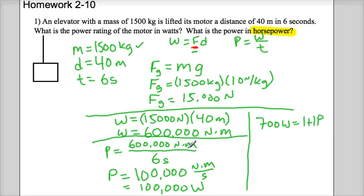So, in order to get that, you simply divide 100,000 by 700 watts per horsepower.